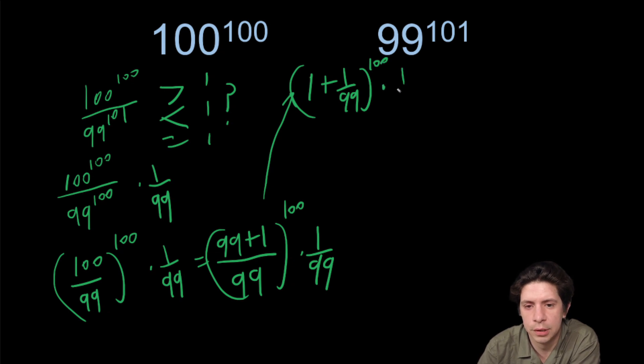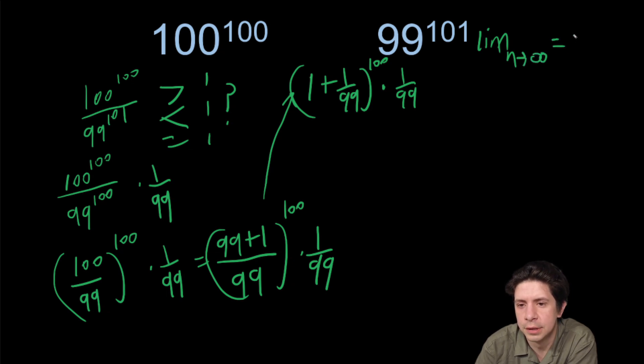Now times one over 99. Now there's a limit rule that says limit as N goes to infinity of one plus one over N to the N equals E.